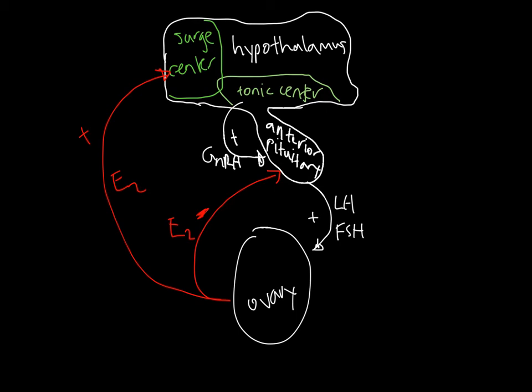So, as the female undergoes puberty, the tonic center has a decreasing sensitivity to negative feedback by estradiol, once again, just like in the male, which allows more GnRH and thus more FSH and LH to be secreted, which allows more estradiol to be produced by the follicle. Estradiol can then reach the threshold and activate the surge center, which causes a flood of GnRH, thus a surge of LH, and ovulation, as mentioned earlier. And voila! We have a post-pubertal female who should hopefully be cycling and producing normal follicles.